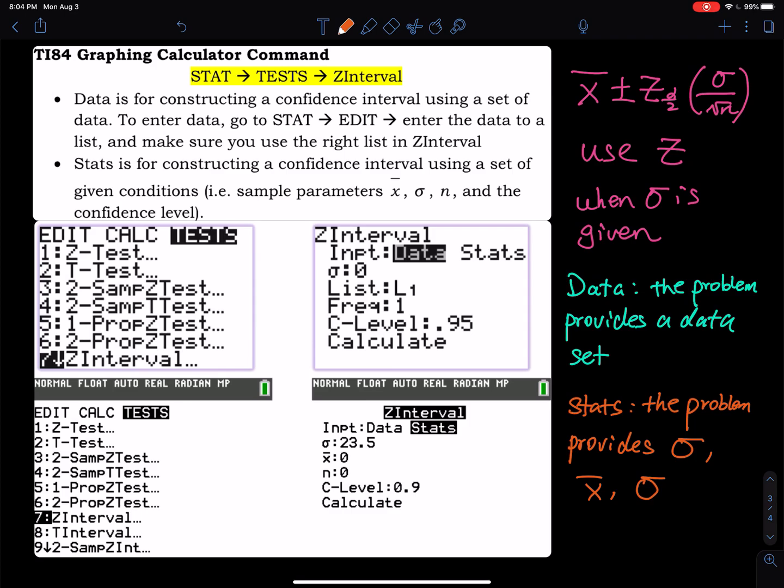Once you're in Z Interval, there are two options: the input is either Data or Stats. If you select the Data option, the problem must give you a set of data. If you select the Stats option, the problem will give you sigma, x-bar, and n.